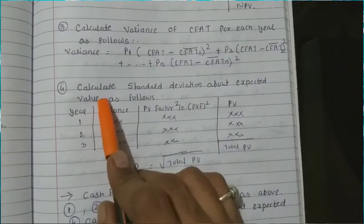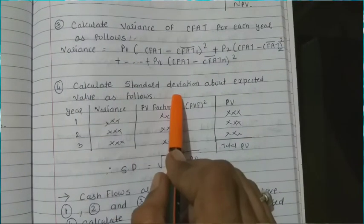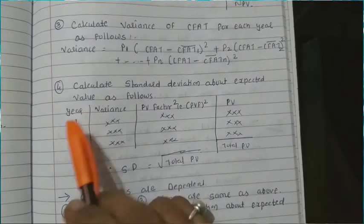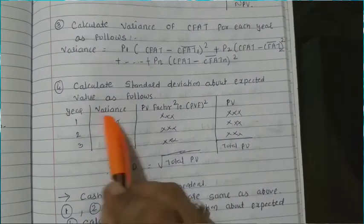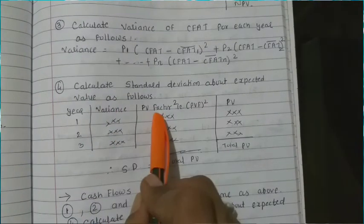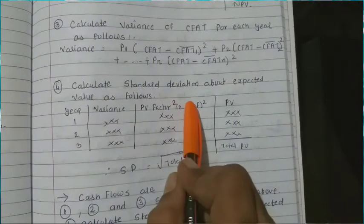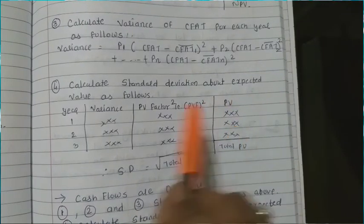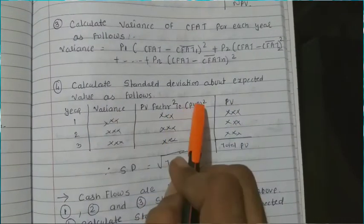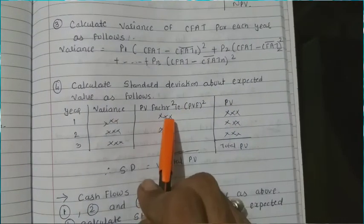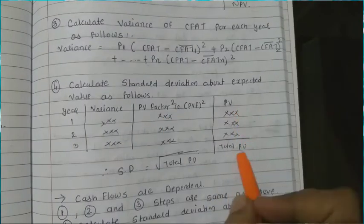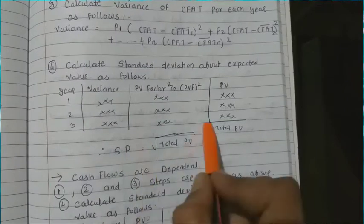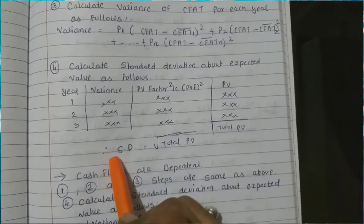At the last step, we calculate the standard deviation about the expected value. Here the variance is multiplied by the present value factor squared — that is, PV factor² — and we take the total under square root to get the standard deviation.